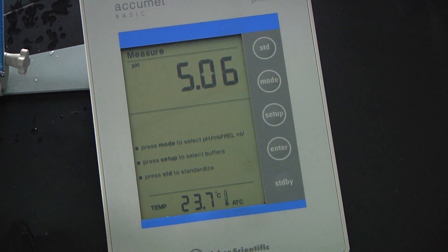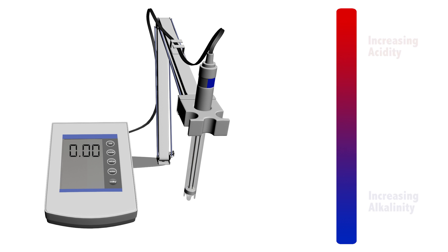Now the pH meter is ready to be calibrated. We need three known standards: an acidic 4.0, a neutral 7.0, and a basic 10.0 standard buffer solution.